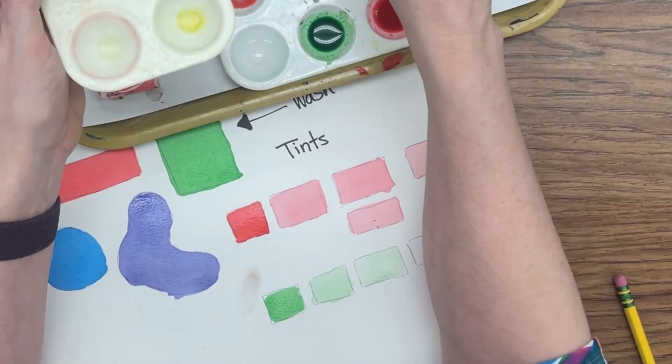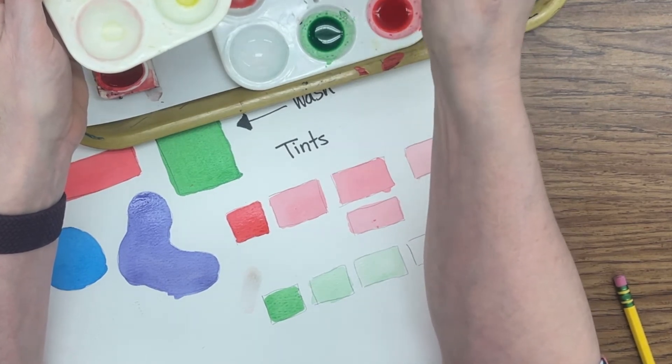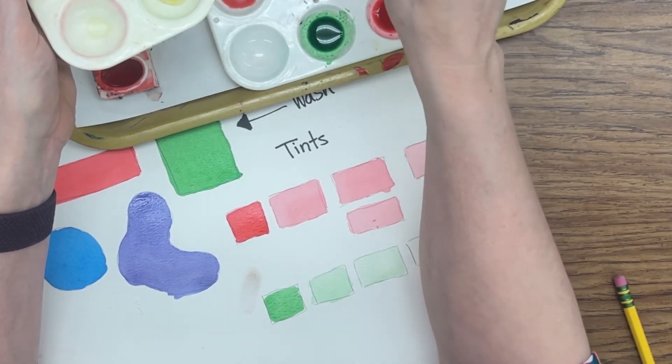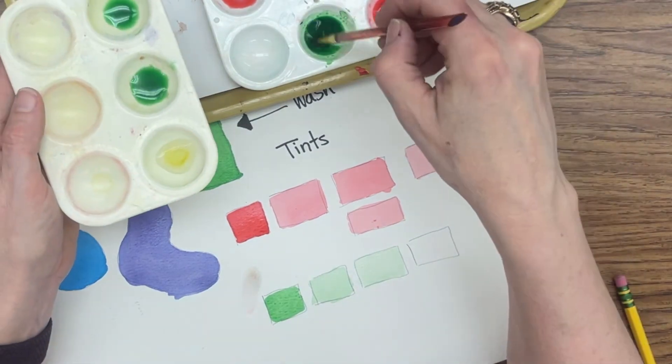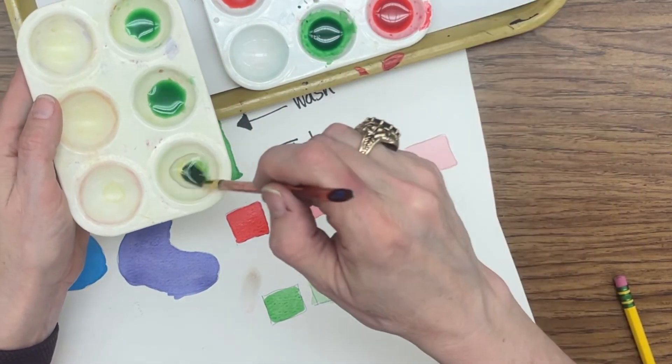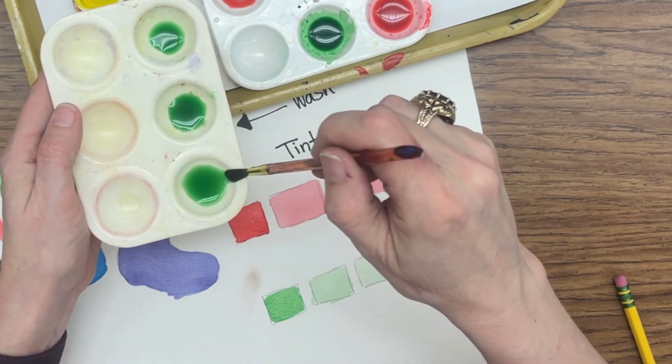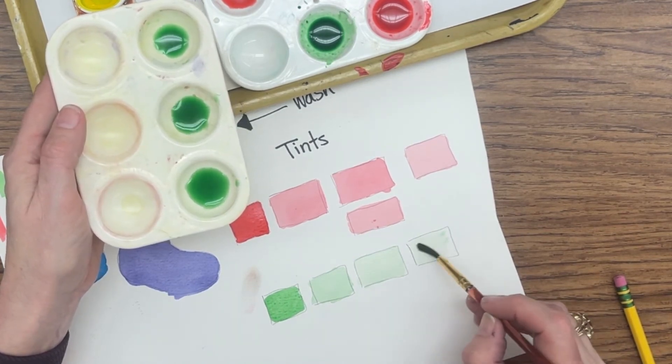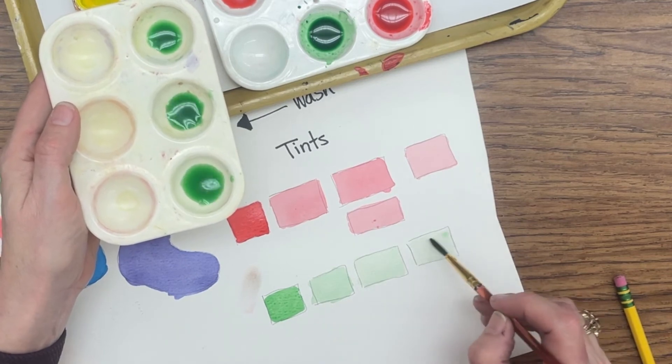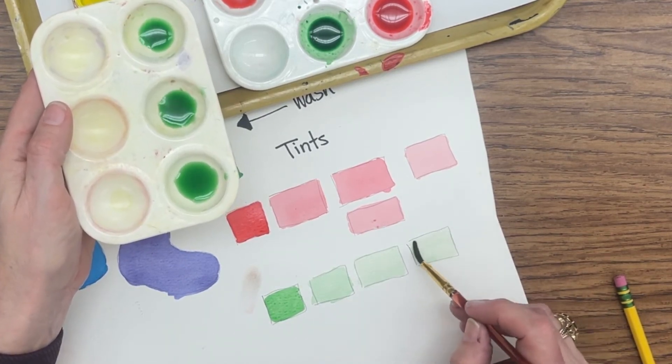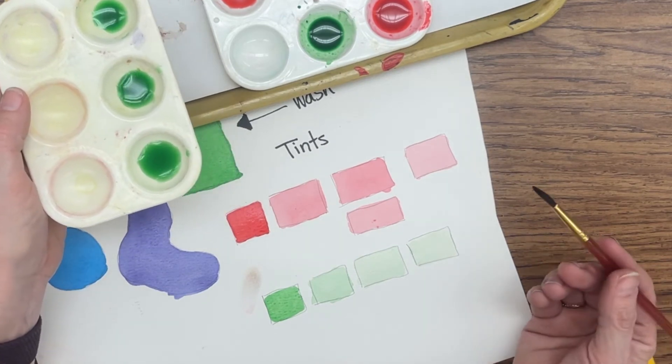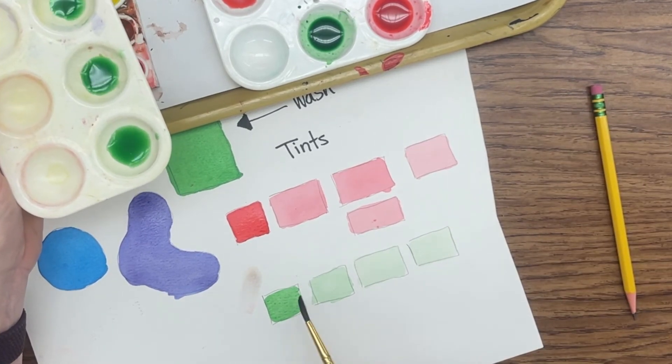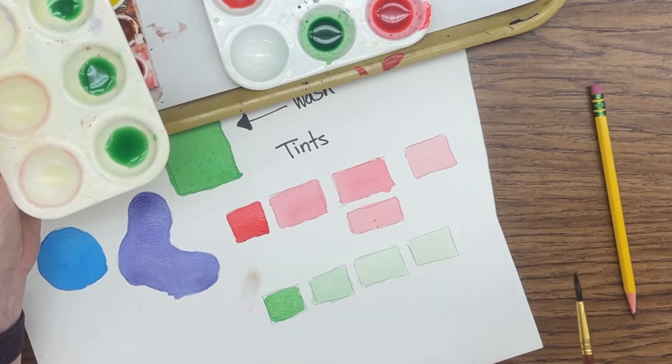This time, eight drops of water. One, two, three, four, five, six, seven, eight. Get rid of my excess water. Get my paint. Touch off my excess. And paint my box. That is so pale that it almost doesn't look like there's anything there. But there is. As it dries, it'll become a little bit clearer. But that's how your tints should be. Each one should be noticeably lighter than the last one.